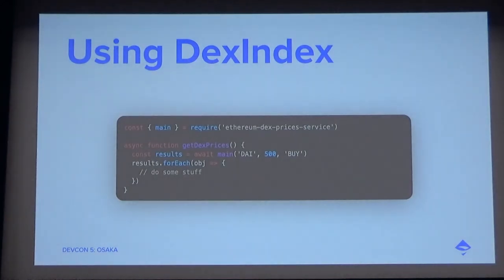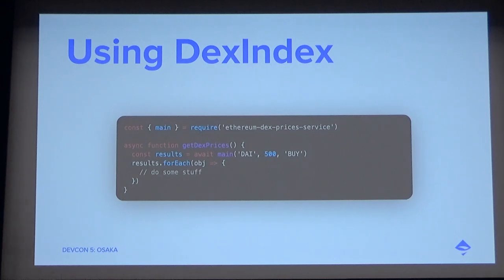Using Dex Index is very simple. You just import the library and call the main function, which will get you the list of quotes given the parameters, ordered by best price. You can also look at the documentation to see other features that Dex Index provides, like the command line tool.